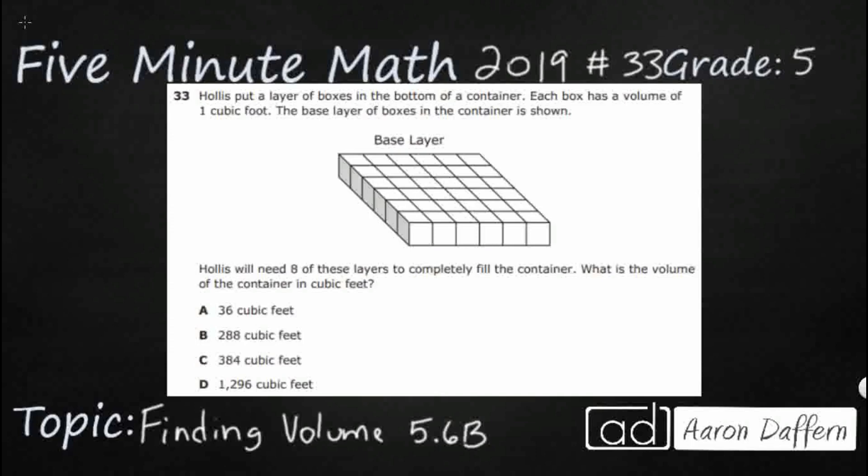So we have Hollis, and Hollis is putting a layer of boxes on the bottom of a container, so that's going to be important for us. Each box has a volume of 1 cubic foot, so we've got these little boxes, and they need to be cubes because that's going to help us with volume. So the base layer of boxes in the container is shown.